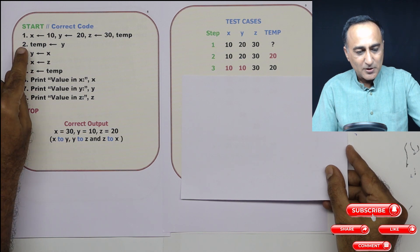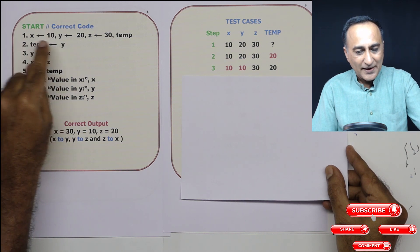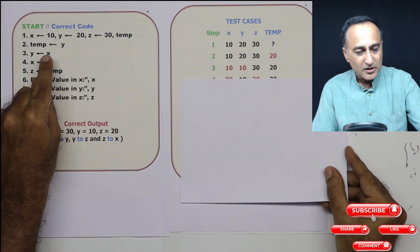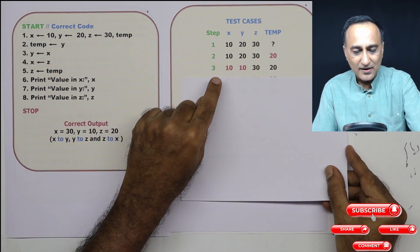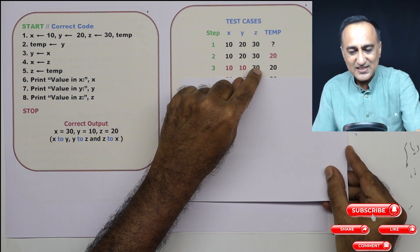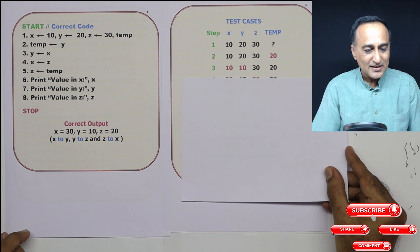So, sorry, step number two, I'm copying the value of y to temp. So here temp has become 20. Now coming to step number three, the value of x is given to y. Since the value of x is given to y, x is 10, y is 10, this is 30 and this is 20. Step number four,